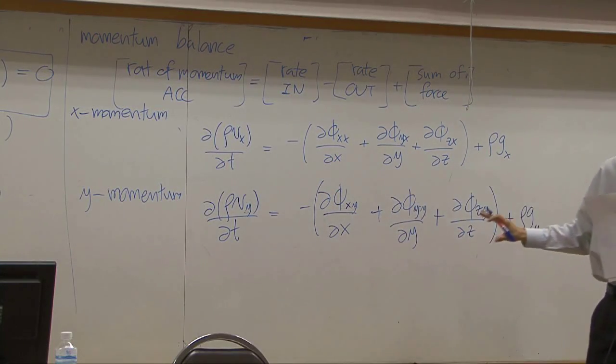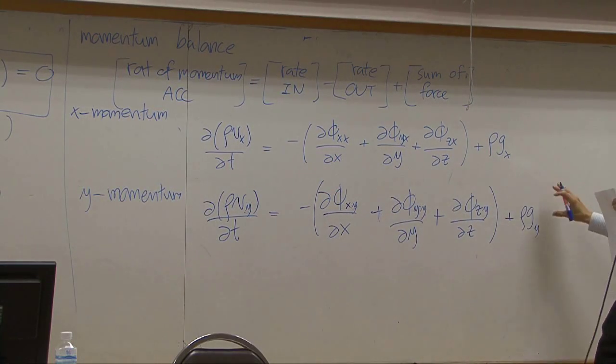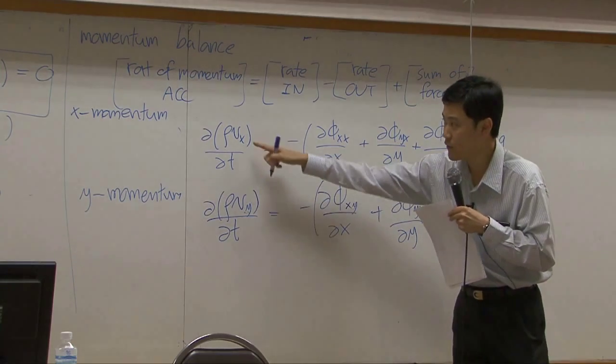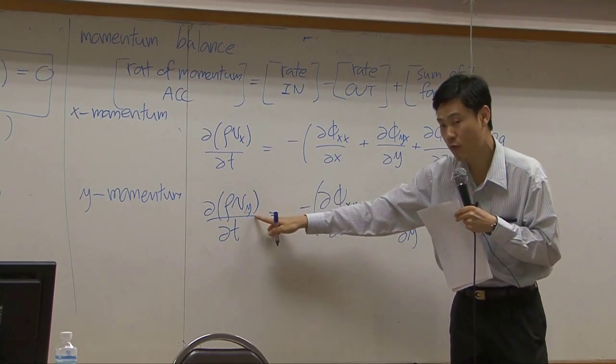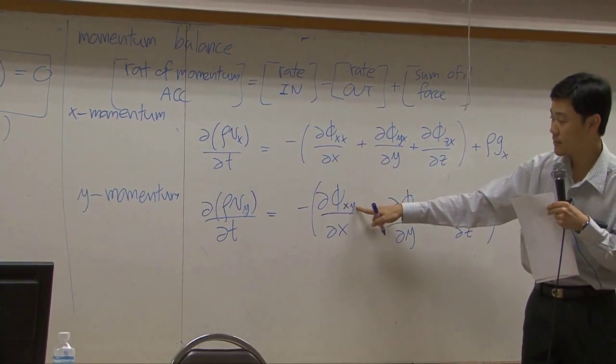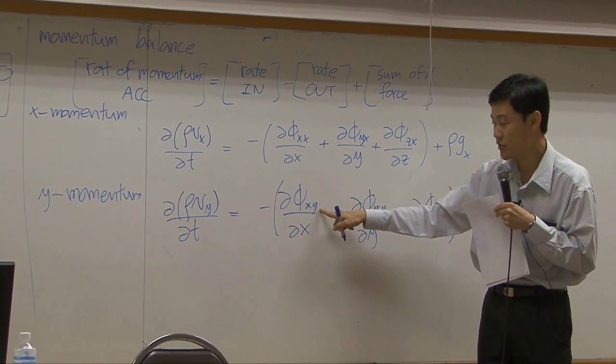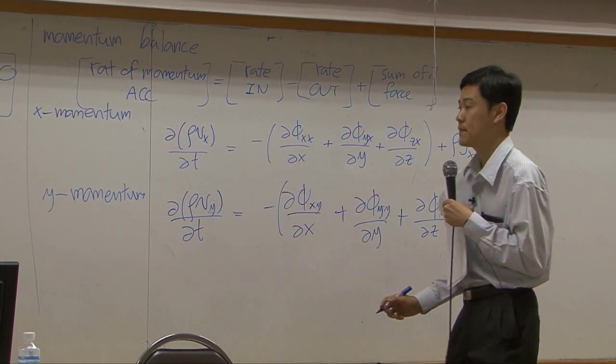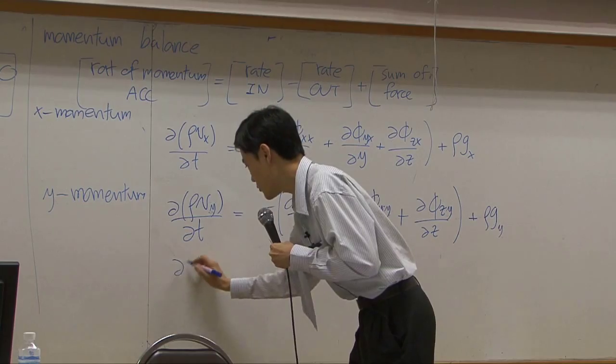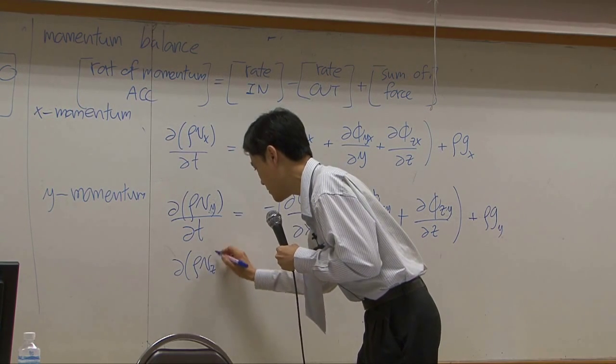You end up with similar equation but it looks something like this. Just change velocity component x to y and then the momentum component here will be changed to y. And for z momentum you get very much similar things.